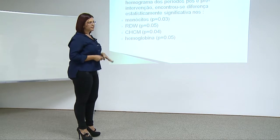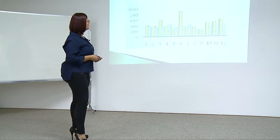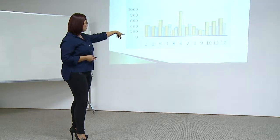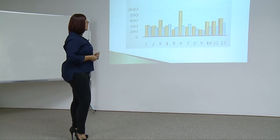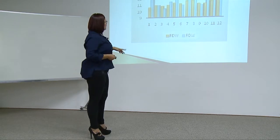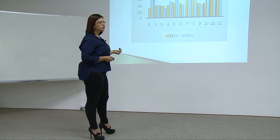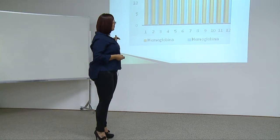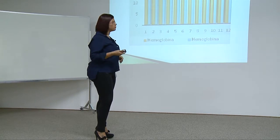Das células avaliadas, as que mais se destacaram foram os monócitos, o CHCM, o RDW e a hemoglobina. O gráfico mostra que os monócitos atingiram praticamente 75% das pacientes, representando as células brancas. O RDW manteve um pouco dentro dos valores de referência, mas também teve alteração — ele aumentou. O CHCM e a hemoglobina mantiveram os níveis de elevação ou tiveram uma leve desnivelada, que será explicada posteriormente.